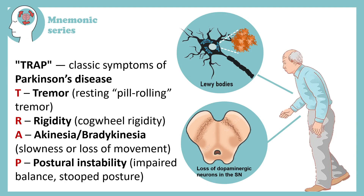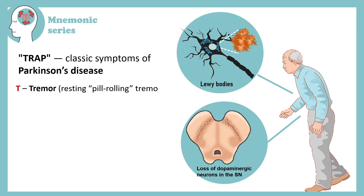Here is a quick mnemonic to remember the classical symptoms in Parkinson disease. It's called TRAP. T stands for tremor, and especially the resting pill-rolling tremor. In resting condition, the thumb and the other fingers would roll against each other as if you are rolling a pill. This is very characteristic of Parkinson.